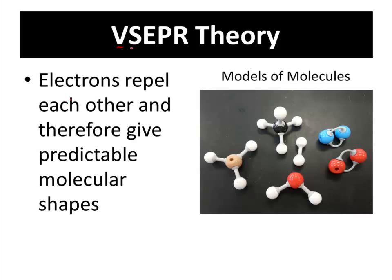It's valence shell electrons — that means your outer shell electrons. Valence shell electron pair repulsion theory means your outer shell electrons repel each other, and therefore they're going to give what we call predictable molecular shapes.